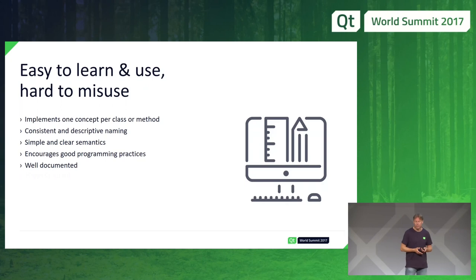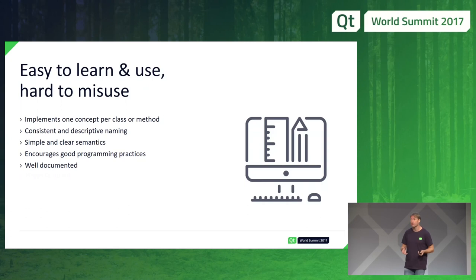Let's not do magic. For example, don't have a setText method that implicitly checks whether the content is HTML and then displays it as HTML — sometimes you have tags and you do want to display it as plain text. And finally, we need to make sure we have very good documentation.